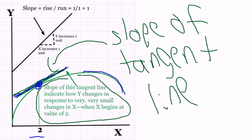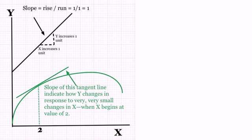What that slope tells us is how y changes when there are very, very small changes in x. Here we're looking at a point where x equals 2.